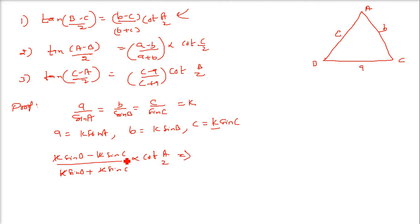What is the formula of sin b minus sin c? It will be 2 sin of (b minus c) by 2 cos of (b plus c) by 2.